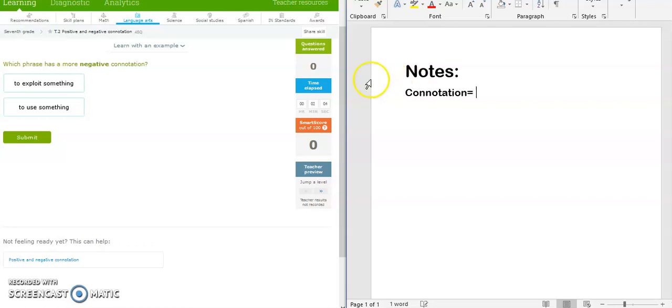What is connotation? We're gonna say, for simplicity reasons, it is either the good or bad feelings associated with a word. So what is the connotation? It's either the good or bad feelings associated with it.